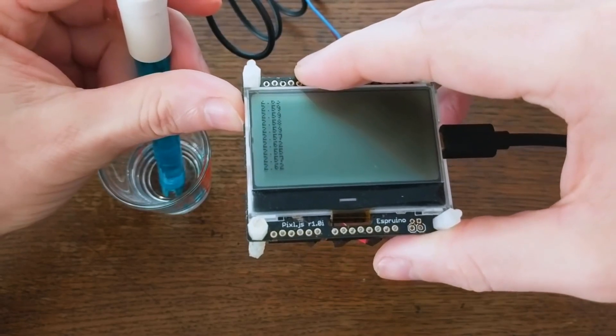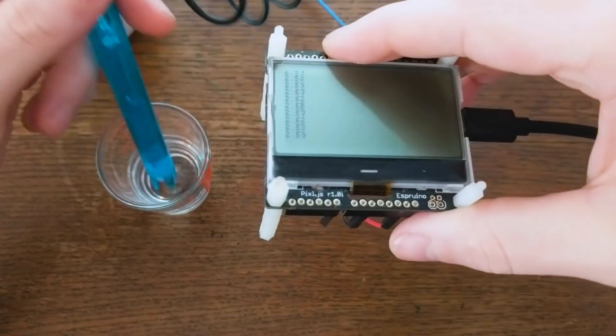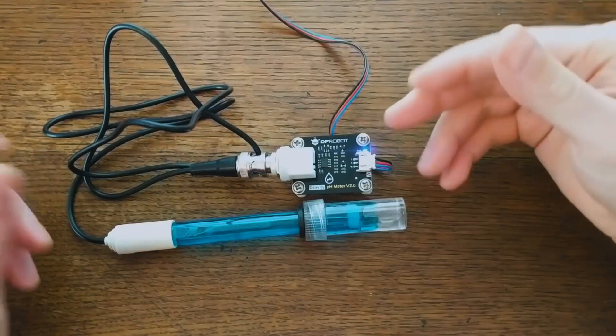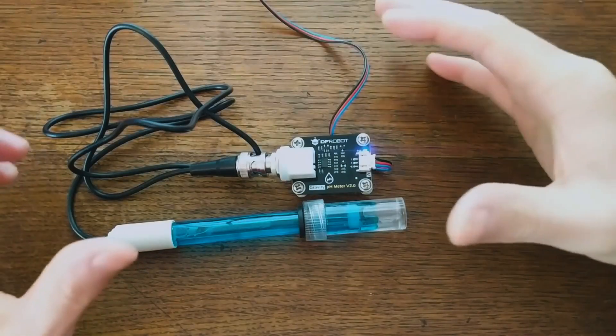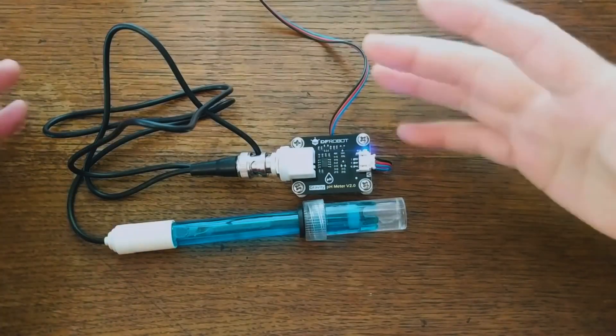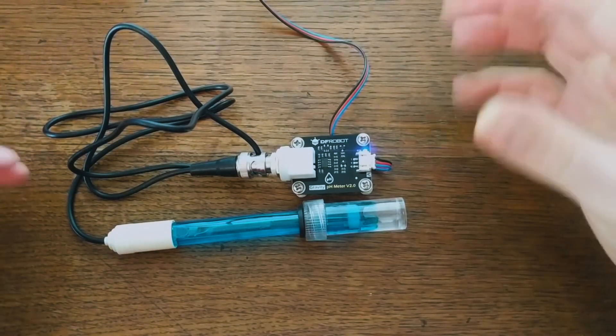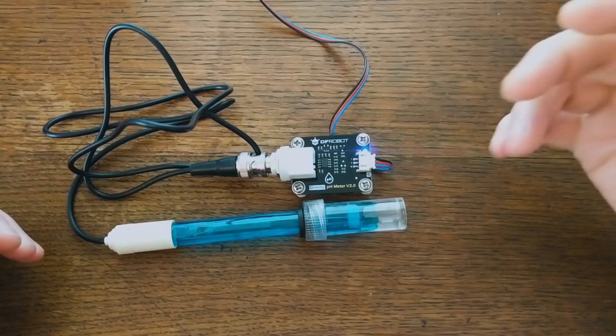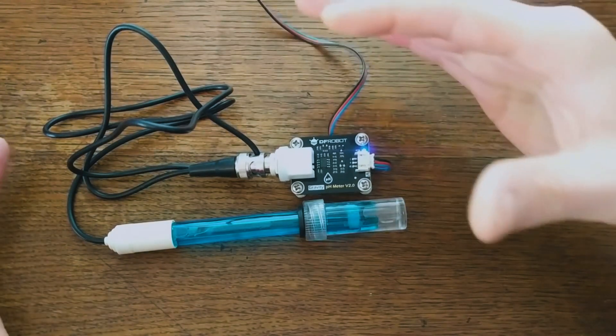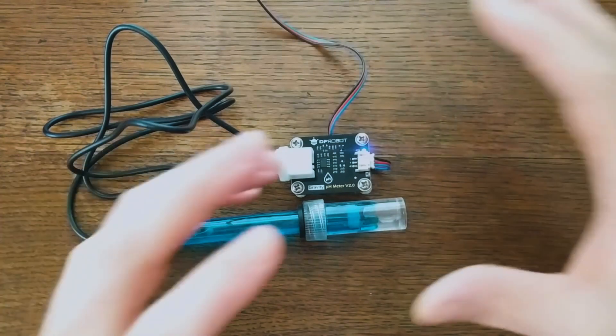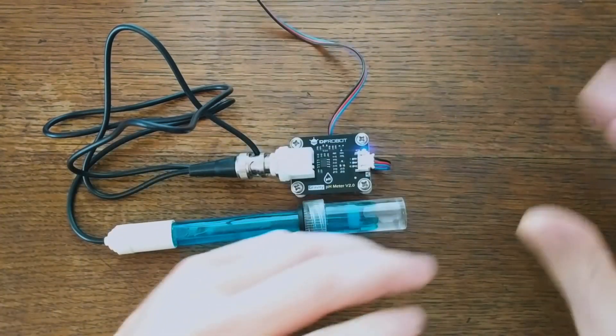Luckily for most of my uses, the 4 to 7 range is where I want the most accuracy anyway. There are a number of reasons why you might want to know the pH of something. For instance, I do a lot of canning and pickling, and that's a situation where there's some really nasty bacteria that can grow on food if it's preserved with a pH above about 4.6.